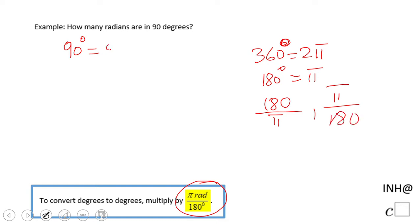So here we're going to have these 90 degrees times—we see this one is the conversion we're going to use—times π over 180 degrees. So the degrees cancel out.